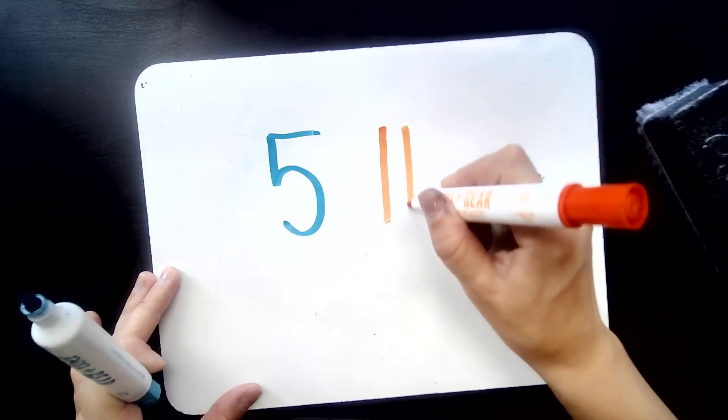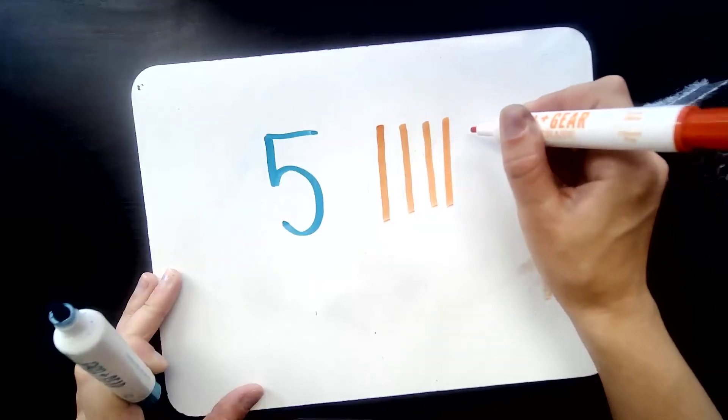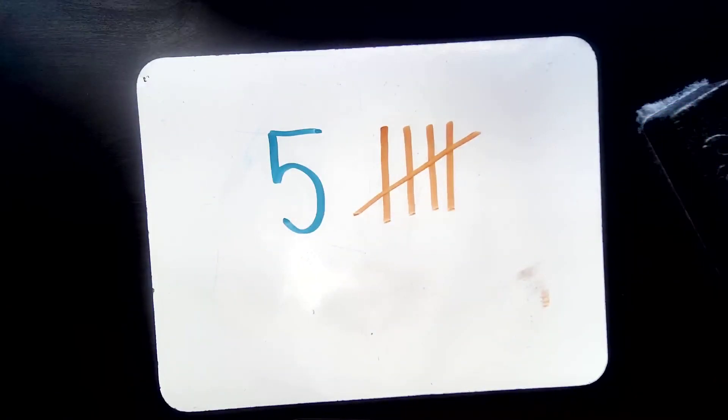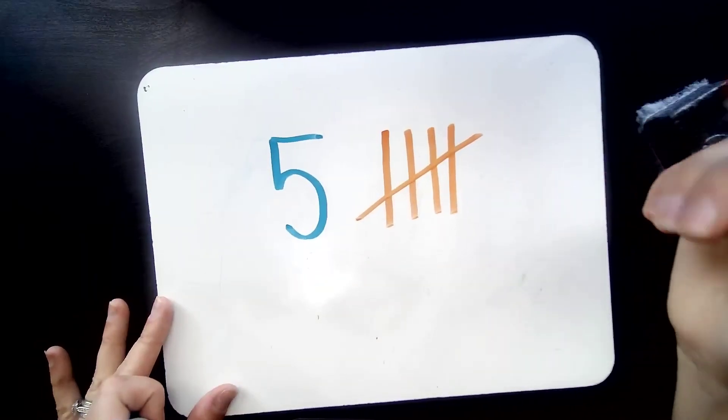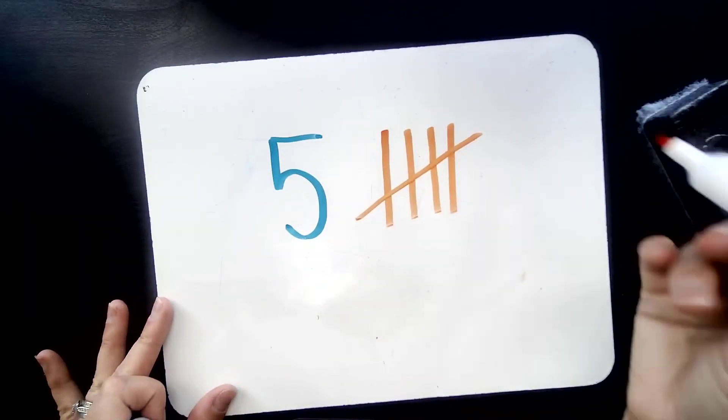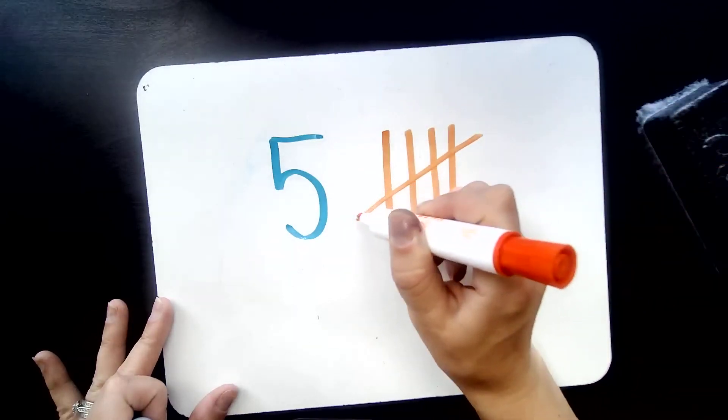One, two, three, four. Number five shuts the door. So that fifth one is the special one. That fifth one is what groups the tallies together to make it a complete little group of five. When you're making your door or your gate, whatever you want to think of it as, you want to make sure it connects all four of the tallies.